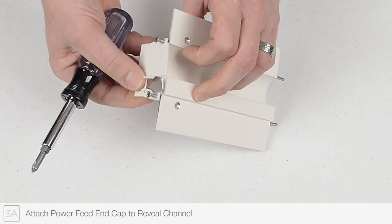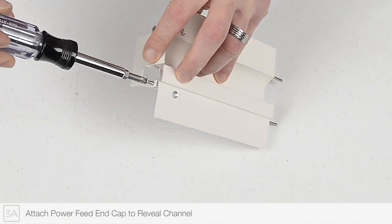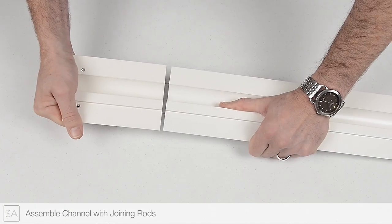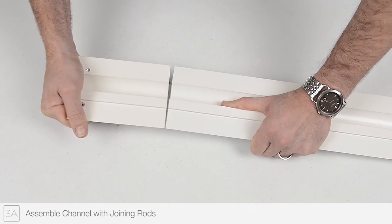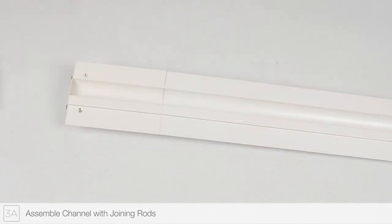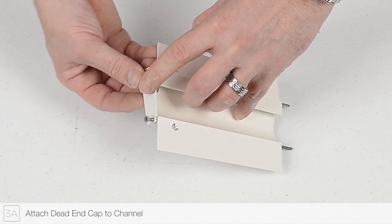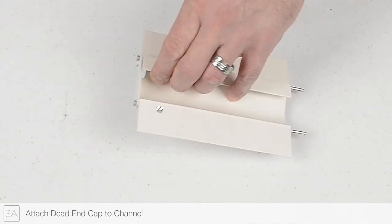Attach the power feed cap to the channel. Use the joining rods to assemble the channel. Install the dead-end cap to the end of the channel opposite the junction box.